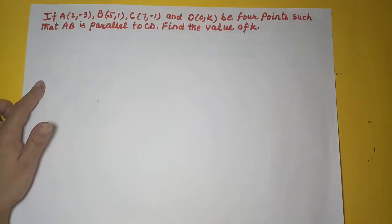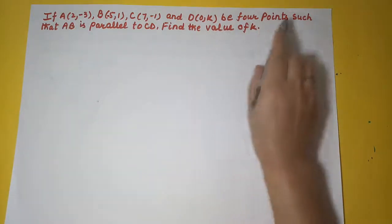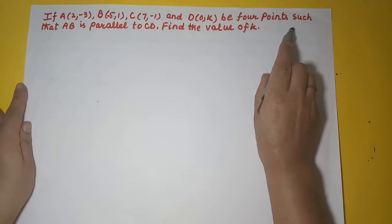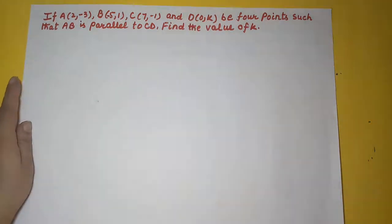We are continuing with the equations of a straight line. Here the question is: if A, B, C, and D be four points such that AB is parallel to CD, find the value of K.